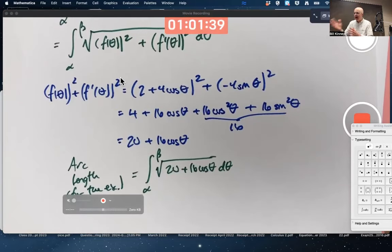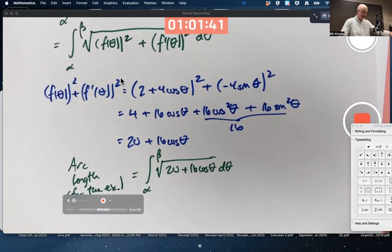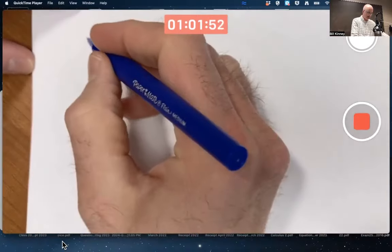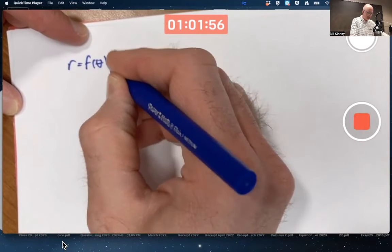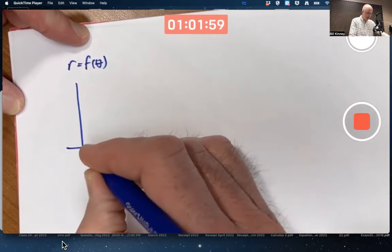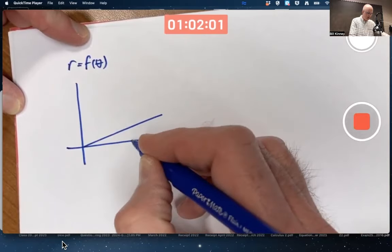Our last topic: area swept out. In the general setting, you've got R equals F of theta. You've got two arbitrary angles in the first quadrant.